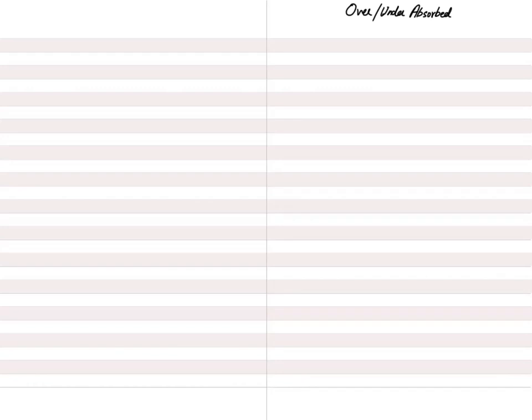Whenever we absorb overhead, we need to calculate an OAR. OAR stands for Overhead Absorption Rate. It is calculated as budgeted overhead divided by budgeted activity. Budgeted overhead is estimated overhead and budgeted activity is estimated activity. So OAR is essentially an estimated overhead absorption rate.